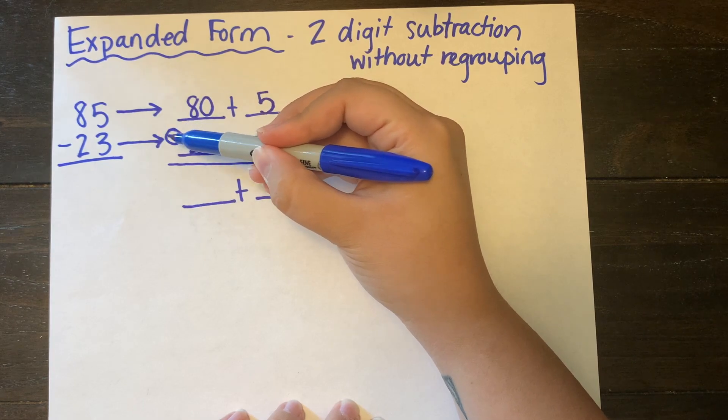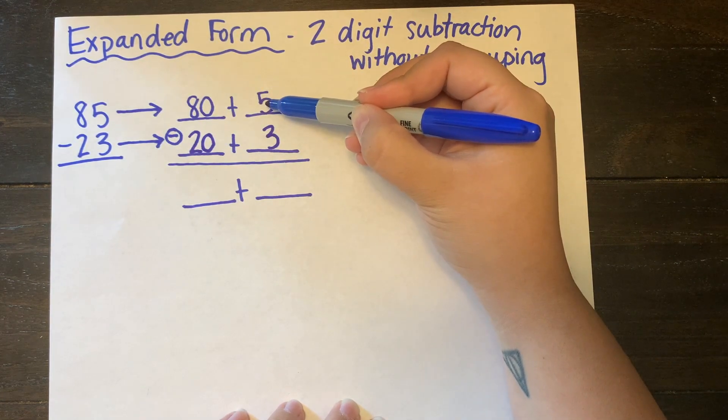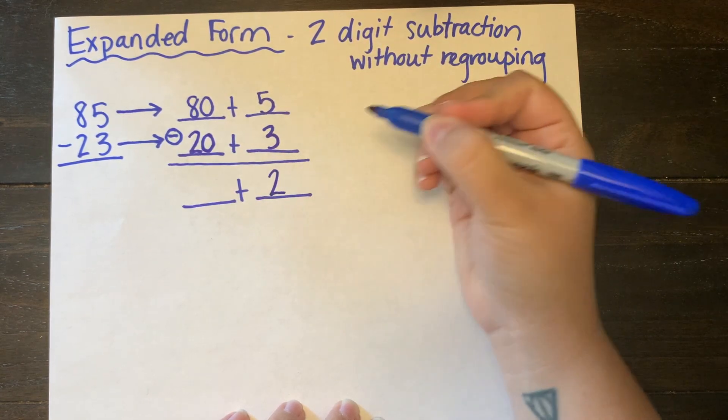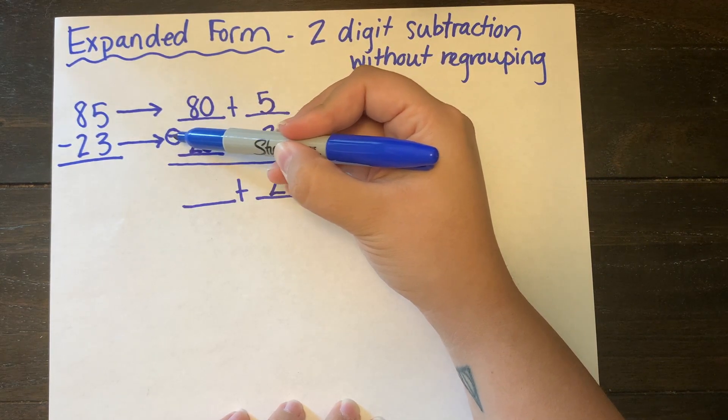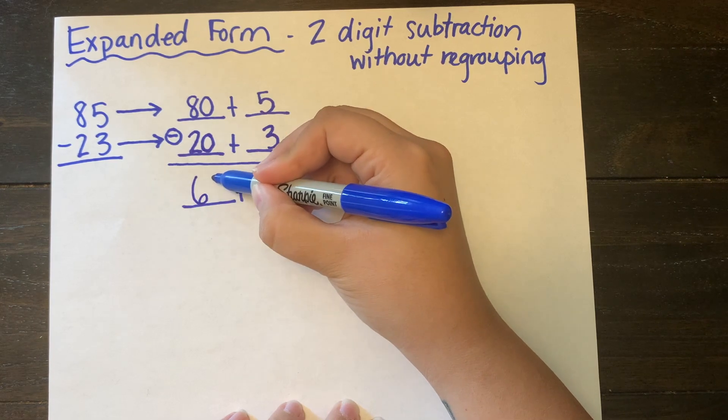Now, remember you are subtracting regardless of how many addition symbols you see. So I'm going to take 3 away from 5 which is going to leave two ones. And then I'm going to look at my tens column. I'm going to take 20 away from 80 which is going to equal 60.